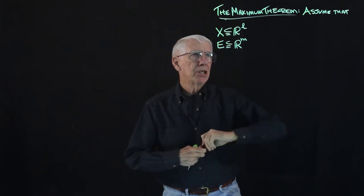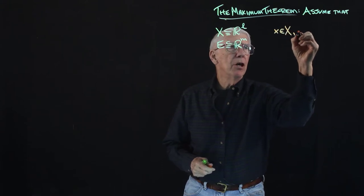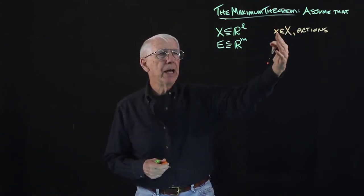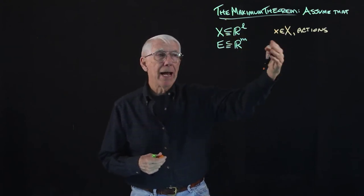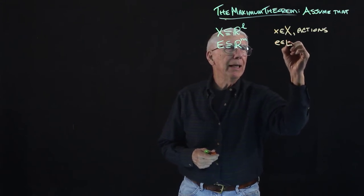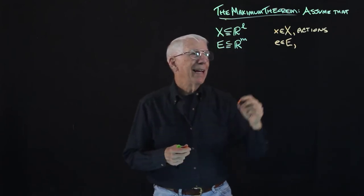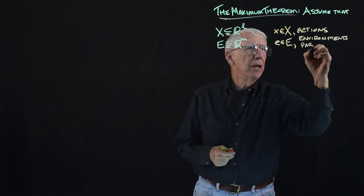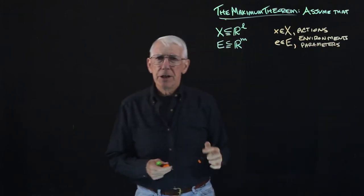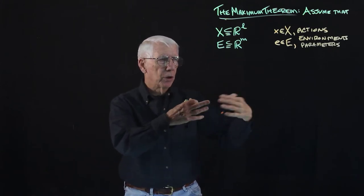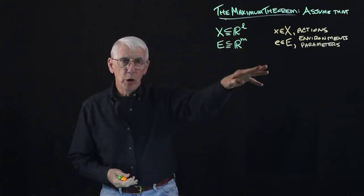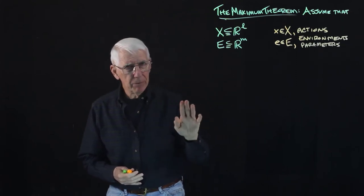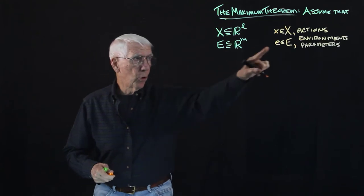The elements of X — little x's in capital X — those are alternative actions that the decision maker is going to choose from. The decision maker will choose one element of X as the action to take. The elements of capital E, for which we'll use little e, those are environments or parameter values — the alternative environments that the decision maker faces or may find themselves in. Let's go over here and follow along with one of the primary applications of the theorem: demand theory.